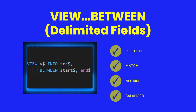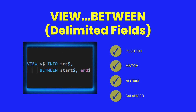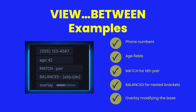View.between is the live counterpart of between function. Instead of returning a copy, the view binds to the region between two delimiters. The delimiter search is evaluated lazily, meaning it updates only when the source changes. Match selects the nth occurrence, position starts scanning from an offset, Notrim preserves white space, and Balanced finds the correctly nested region when delimiters nest. These examples show dynamic delimiter-based extraction. Views relocate their slices whenever the base string changes and always represent the current content. Using Balanced, you can even extract correctly nested structures, something most substring functions struggle with.